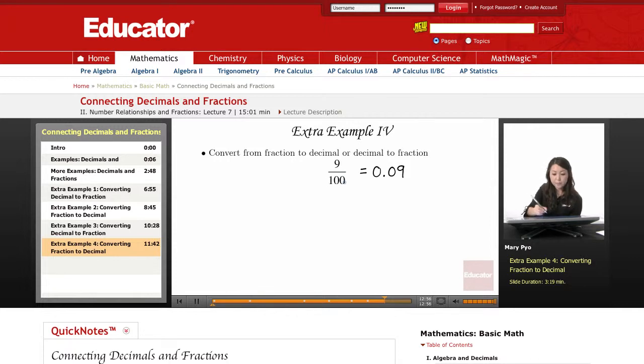Whenever my denominator is 10 or 100 or 1,000, any number that's a multiple of 10, all I'm going to do is take that top number, let's write that out, the top number is 9, and I'm going to count how many zeros I have here. So I have 1, I have 2 zeros.